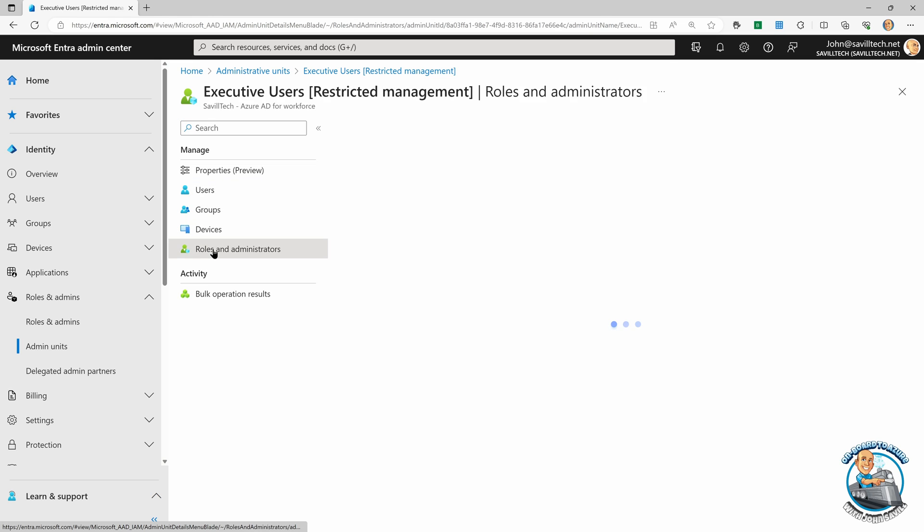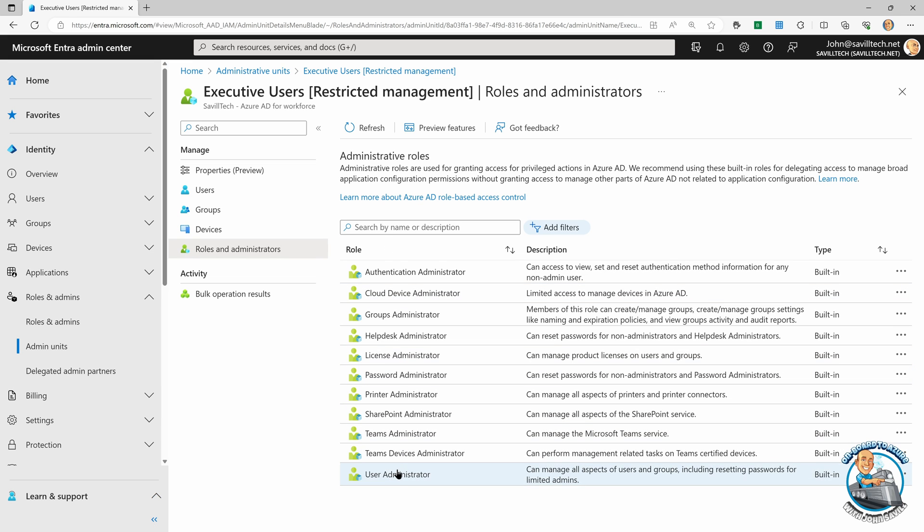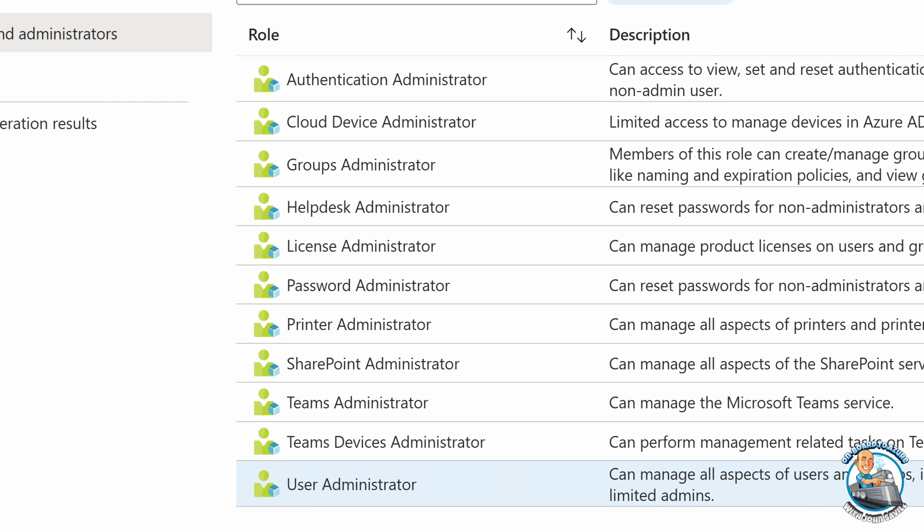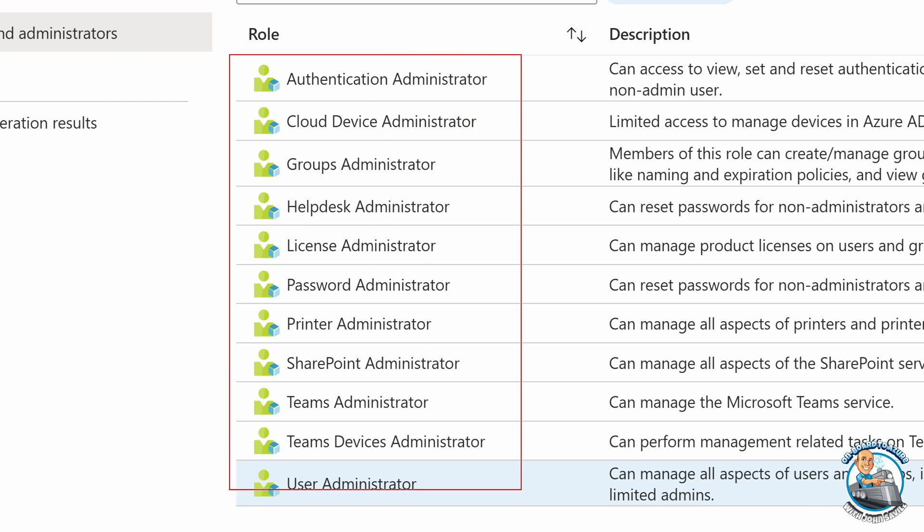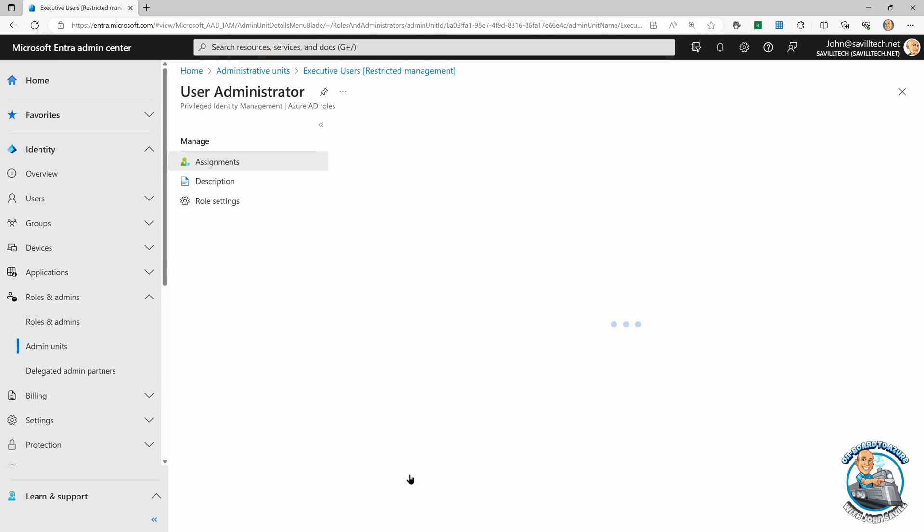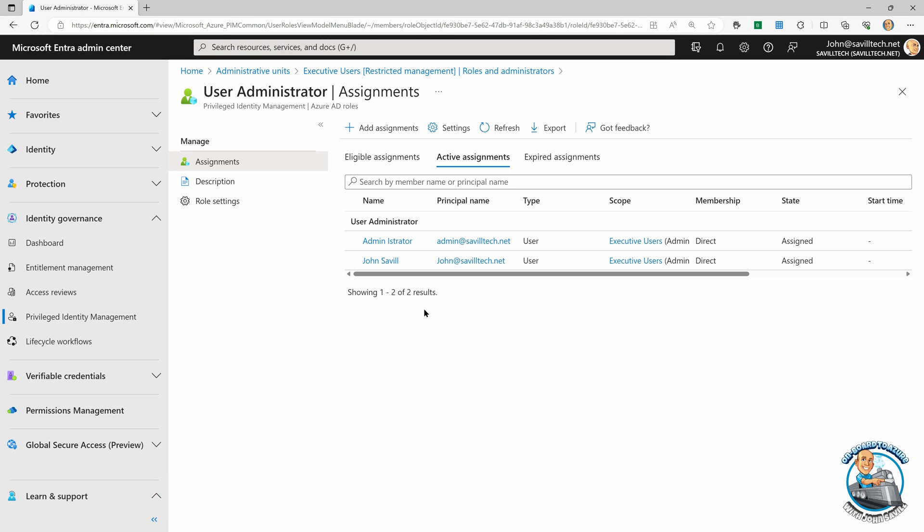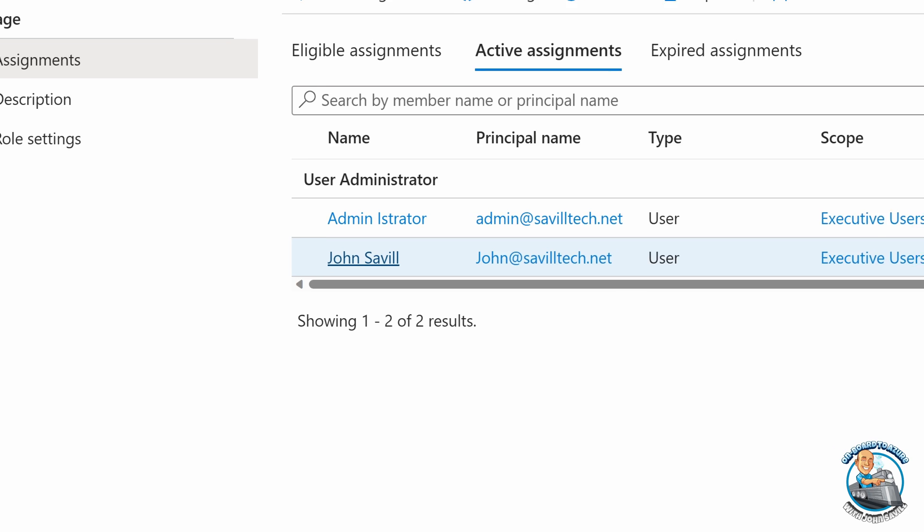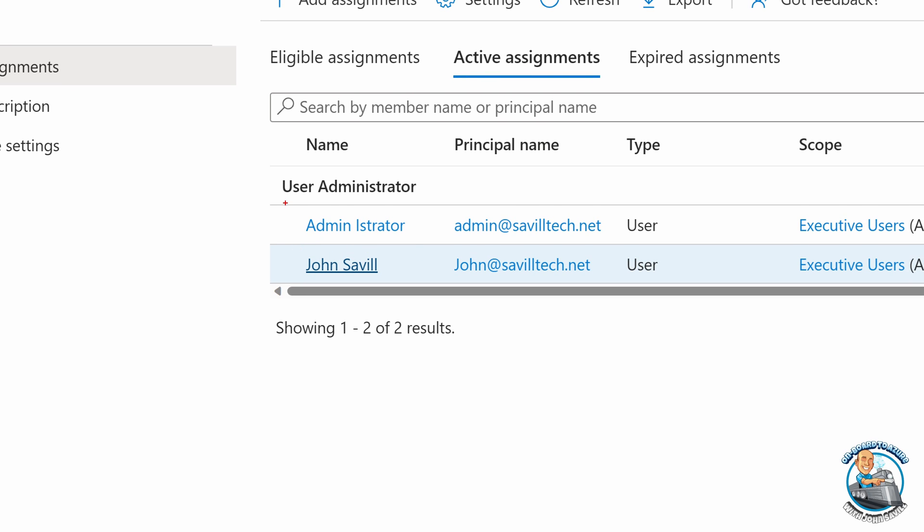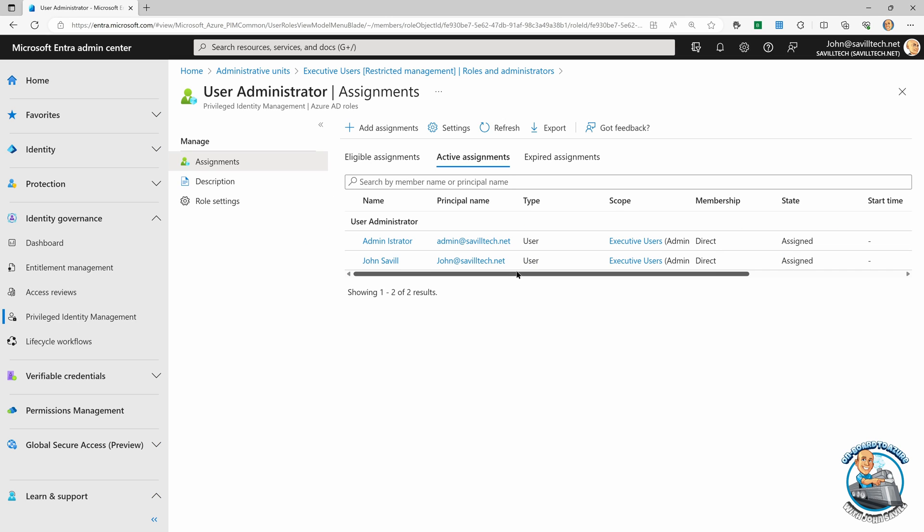And then if I look at the roles, it's at this particular level, I can grant all of these different roles. And in this case, I've granted user administrator just to John and an admin account, a break glass account. But other people with a certain role would not have that.